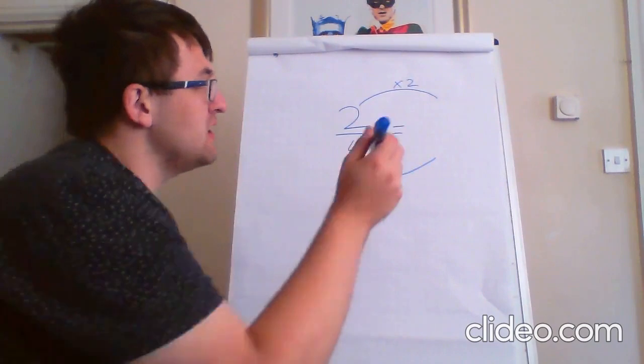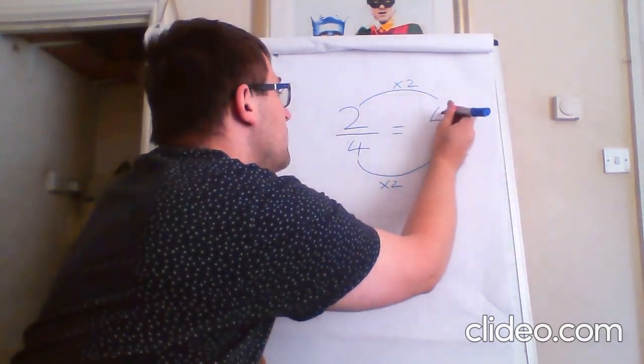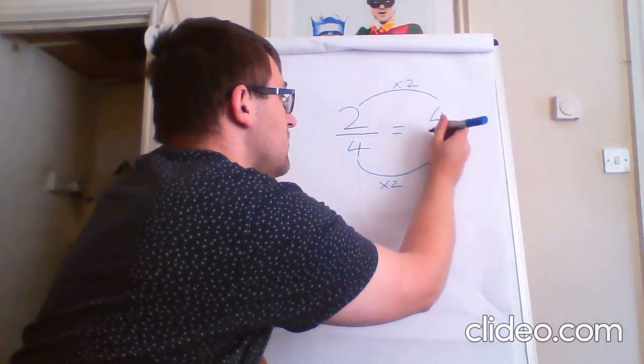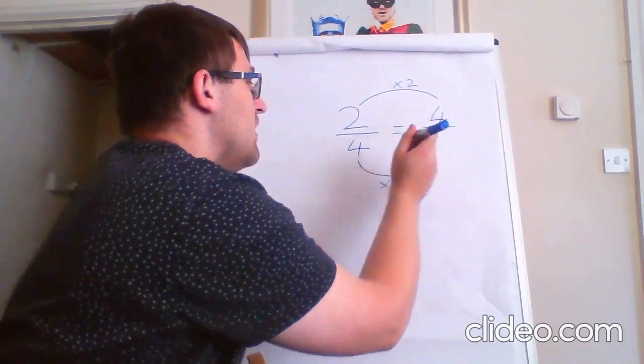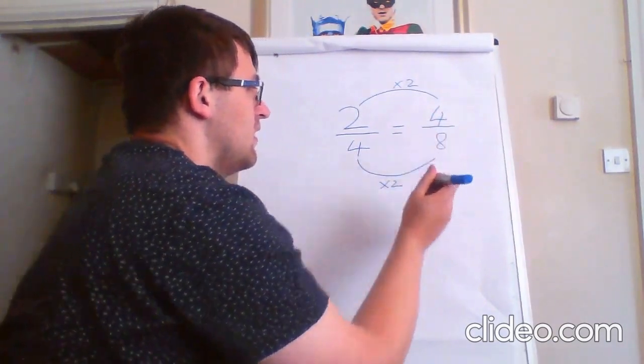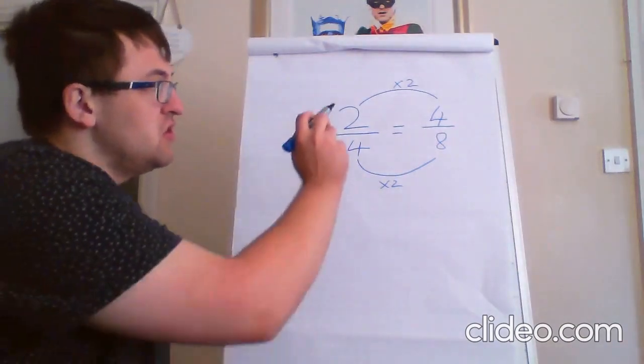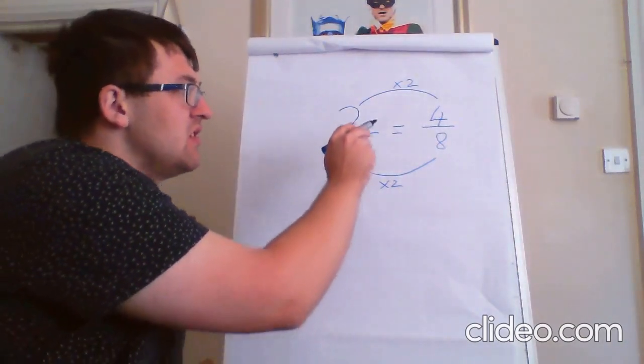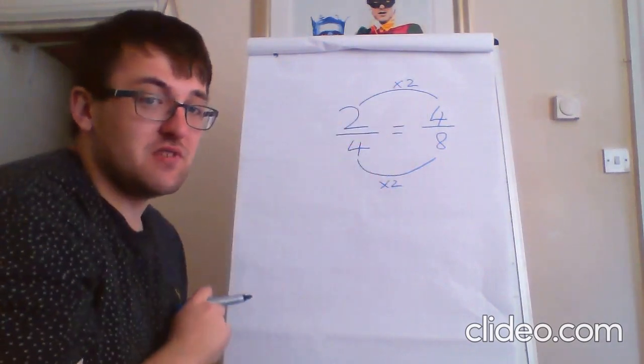Now, two times two is four. And four times two is eight. So, that means two quarters is equivalent to four eighths.